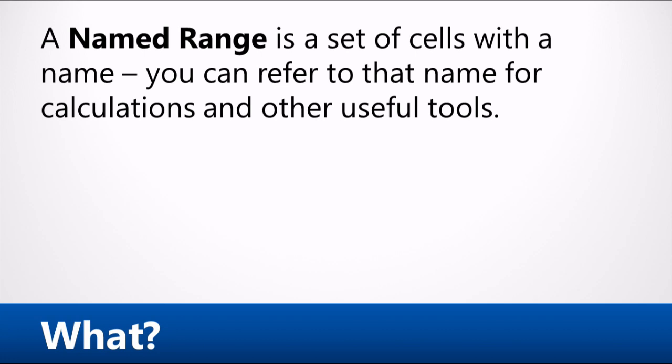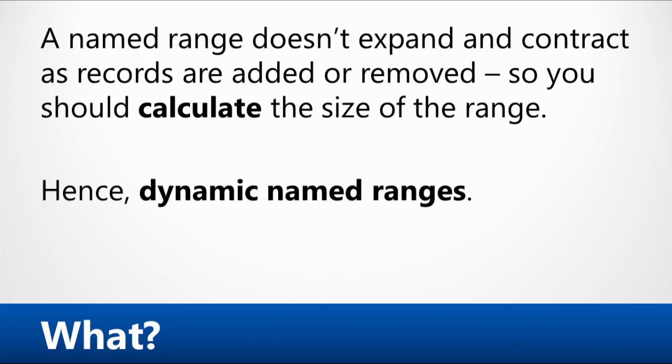A named range is any set of cells that you can refer to not by their cell reference — A1, B2, etc. — but rather by its name. The reason you would want to do this is to make it easier to bring this information in and use it in your calculations and other tools in Excel. The one problem a named range has is that it's very specific to how big that range happens to be. So sometimes we need to be able to calculate how big the named range needs to be — it needs to grow and shrink as more records are added or removed. So we're going to make a dynamic named range.